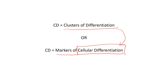Last I checked, there were about 400 CD markers being used. You do not need to know all 400 — you need to know about 25. Just like cytokines, it's easier if you try to remember them by what they do and the cell types that they commonly appear on, because that'll also help you recognize the cells.